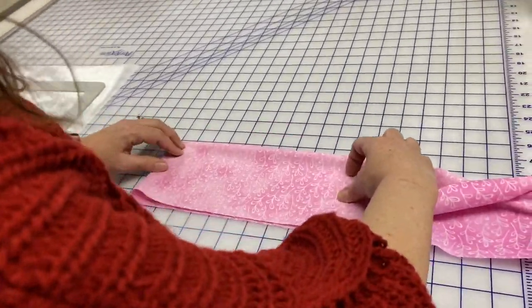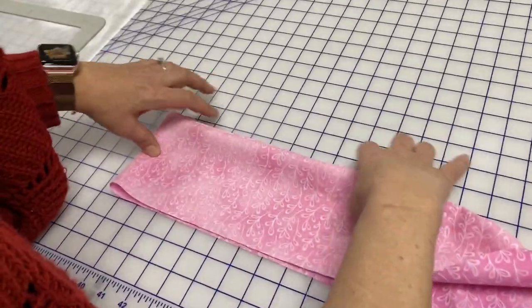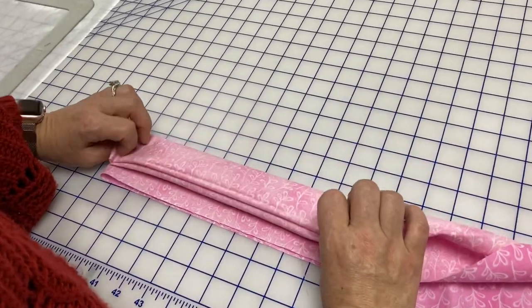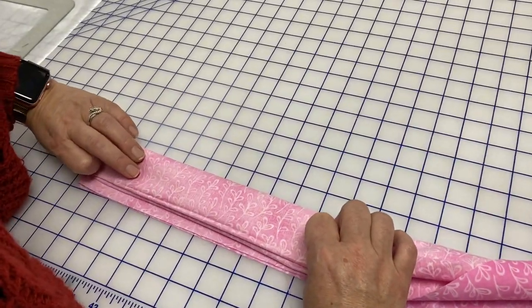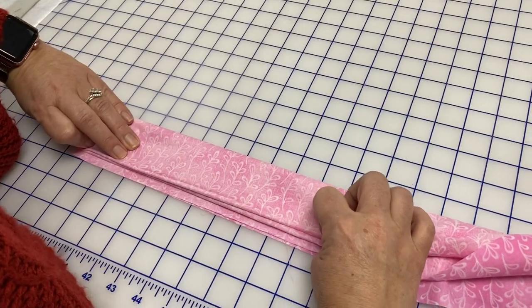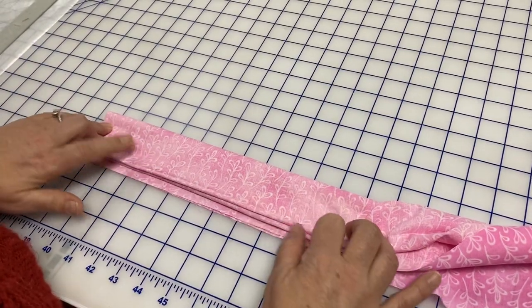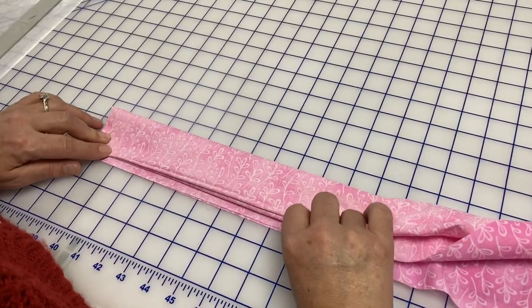Then I'm going to take the top, my fold, and bring it down to the raw edge, but I'm going to leave my quarter inch seam allowance out of the equation.